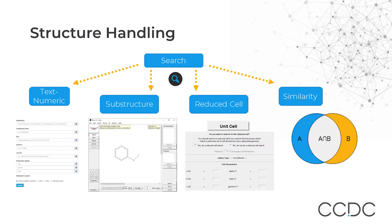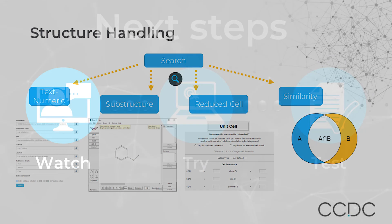In terms of searches, there are four main types — similar to what you'd find in ConQuest and WebCSD. Those are text/numeric searching, substructure, reduced cell, and similarity. The idea is that you create queries the same way you would through ConQuest, with search criteria you're looking for. We'll be covering this in the demo.